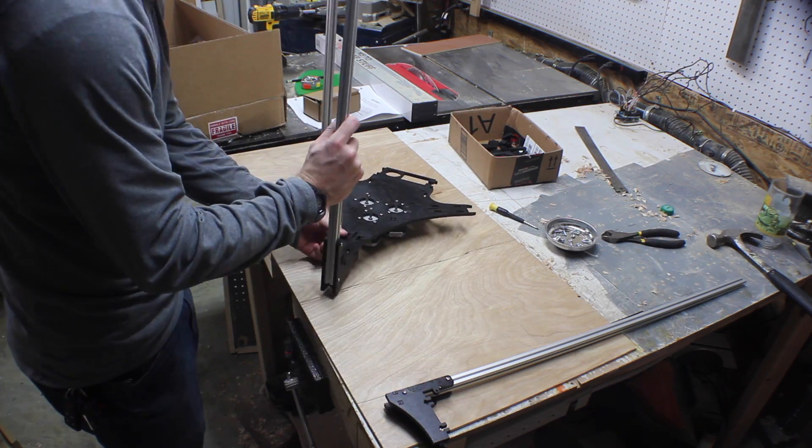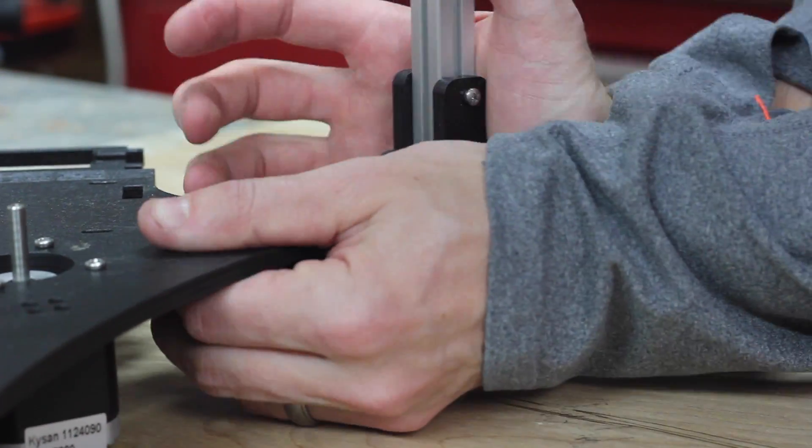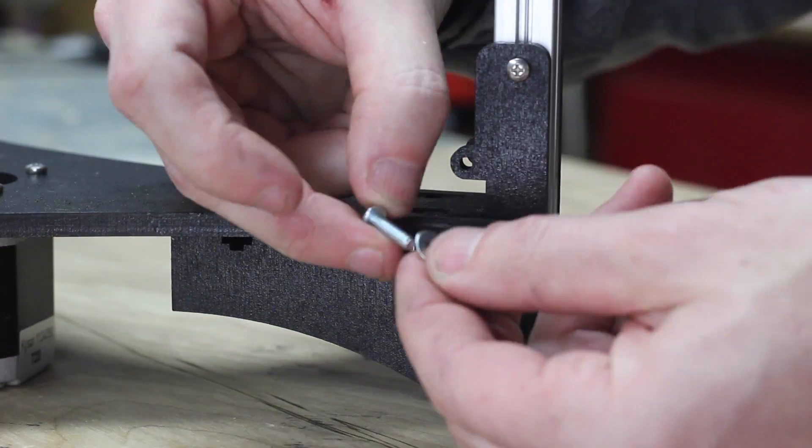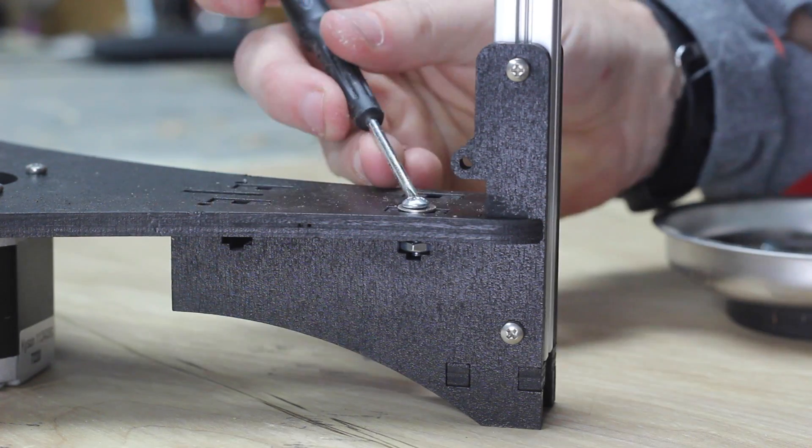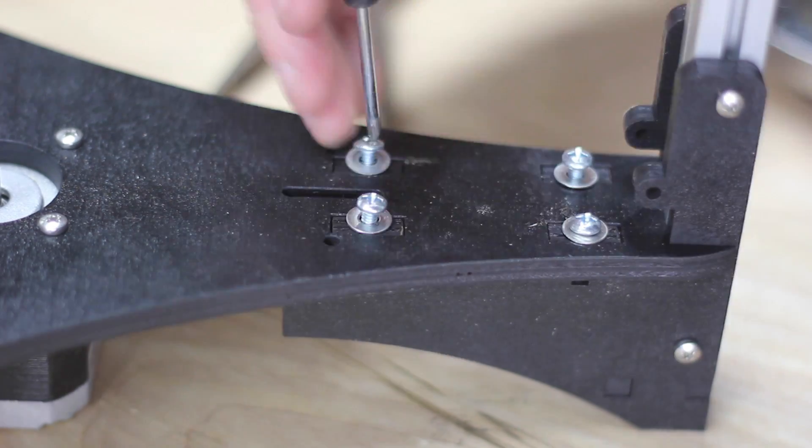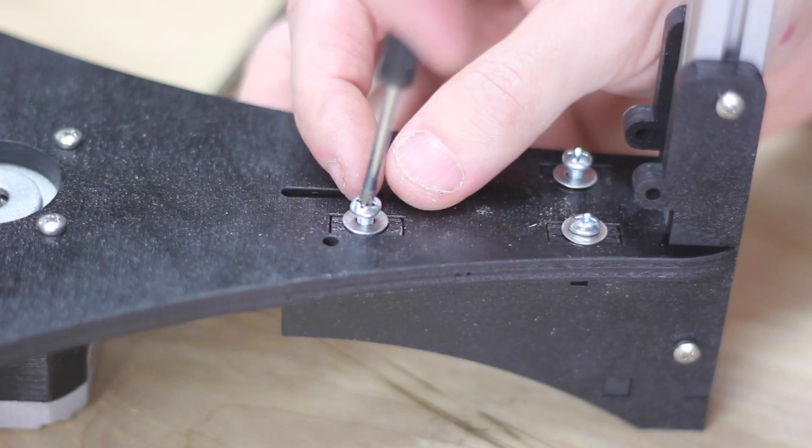Each one of these feet snaps into the slots that are cut into the bottom panel. You finally secure them by sliding in a nut into the hole on the side and driving a screw and a washer down from the top. There's four of these per foot.